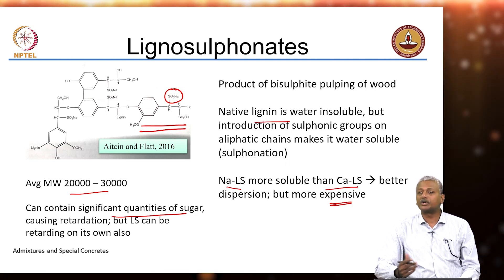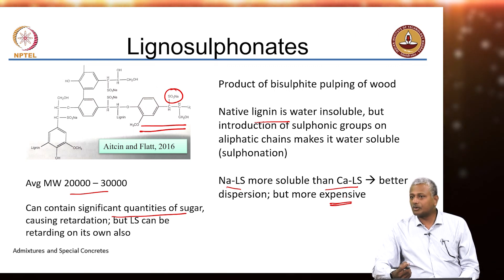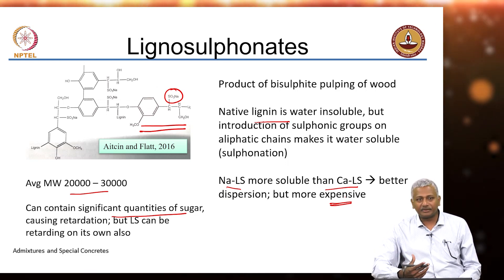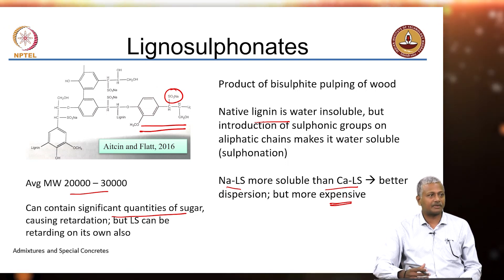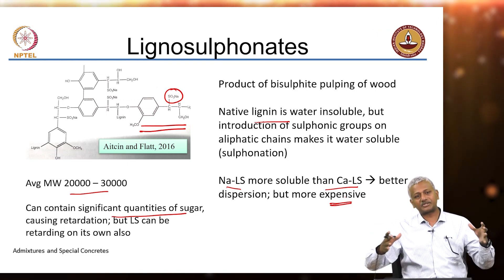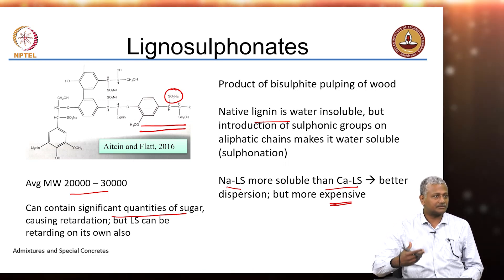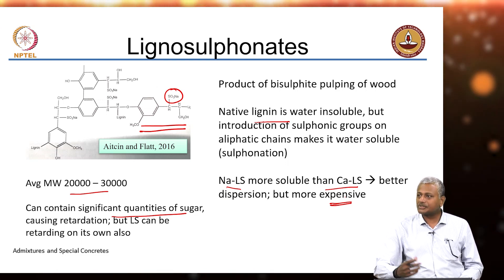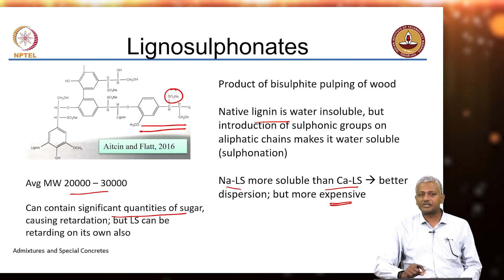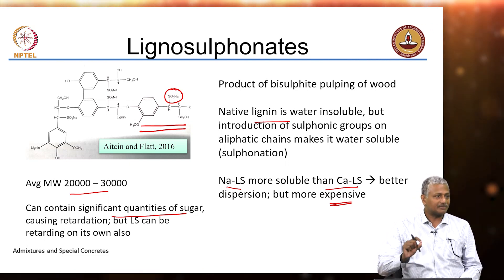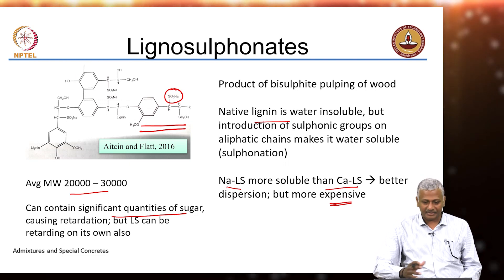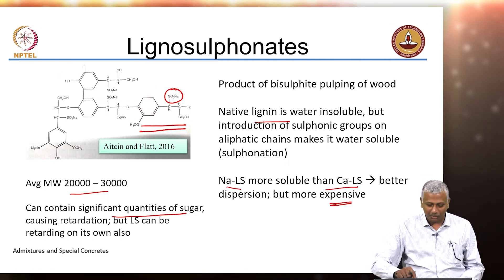An interesting thing is that because sugars are present, these chemicals also attract bacteria. When stored for a long time in drums in heat, these drums start bulging because bacterial action on the sugars generates gas that bulges the drums. So very often in the formulation of these chemicals we also add what is called a biocide — something that can stop the growth of bacteria in the system.